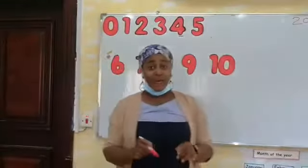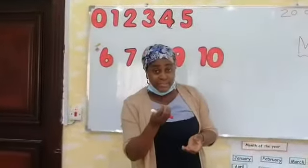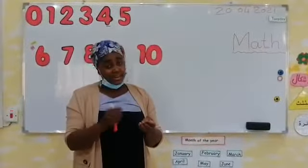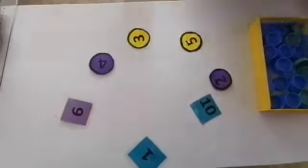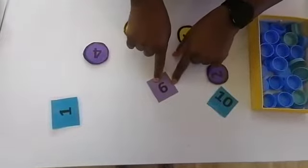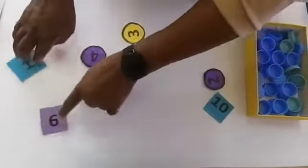So now, we will count our water bottle caps. See the number and count, okay? Let's do it. Okay, can you see these numbers? Look at this number. What number is this? 6. I'll put it on the side.